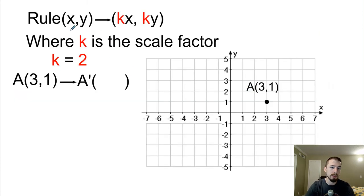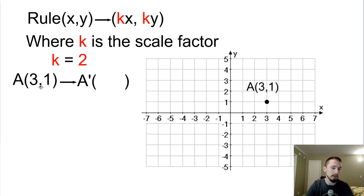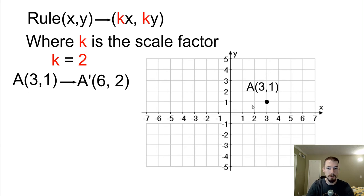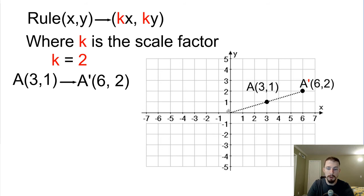The rules for dilations: we take whatever values we have for X and Y and multiply by K, so it's (KX, KY) where K is some scale factor. For instance, if K equals two and we have the point A at (3, 1), we multiply by two to get the point (6, 2). If we graph it out, (6, 2) is A prime — the image of the dilation centered about the origin. You can draw a line going through the pre-image and the image; A prime is going to be twice as far away from the origin as the original point A.